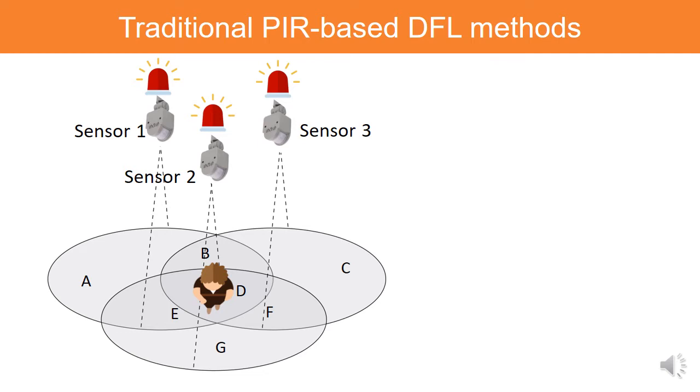Therefore, we can infer the person's location by which sensors are triggered. However, since these methods transfer the PIR sensors' analog signal to binary information for localization, they usually require high deployment density to achieve high localization accuracy.